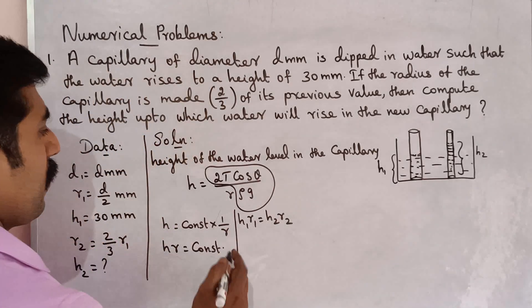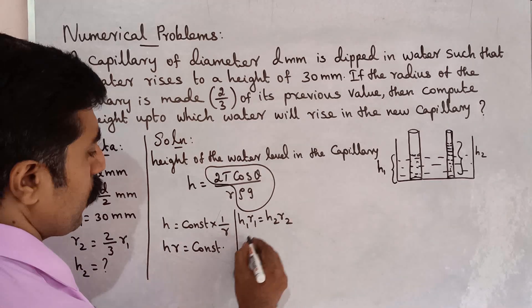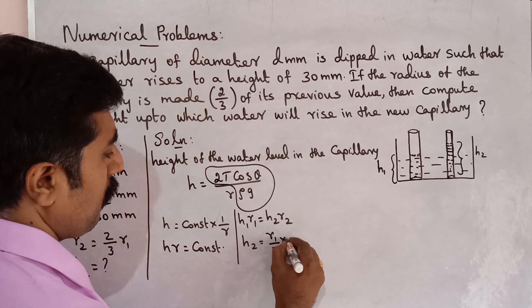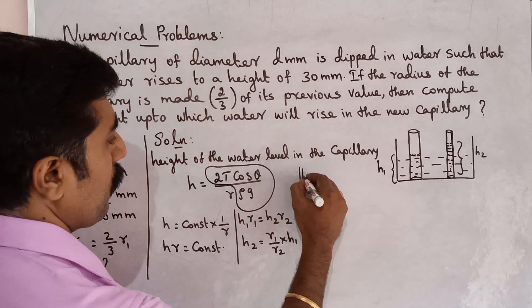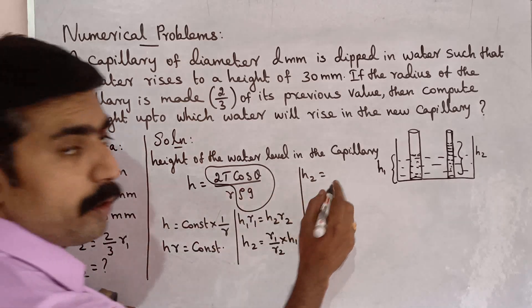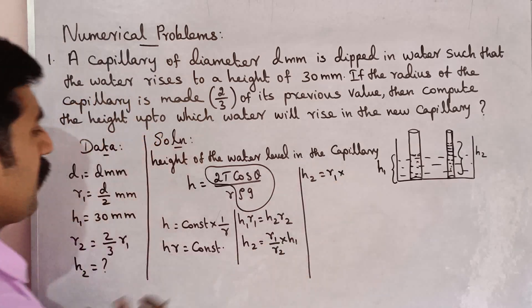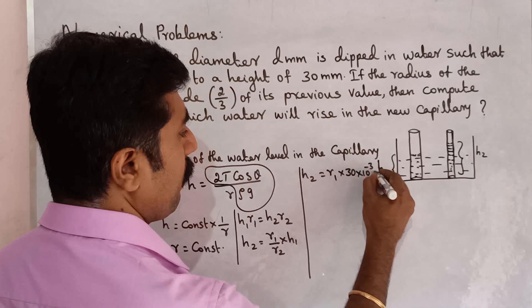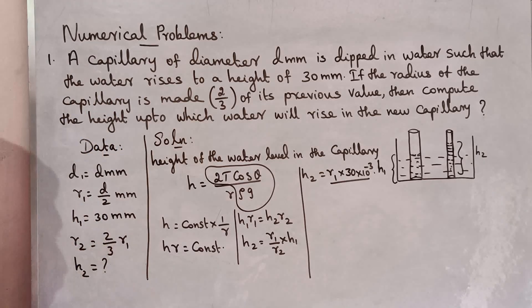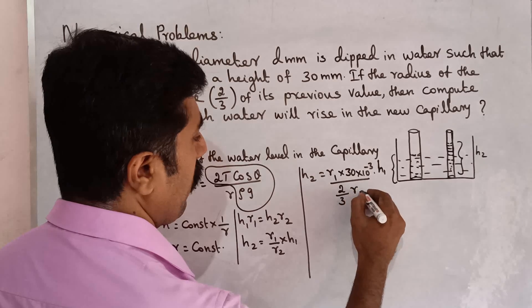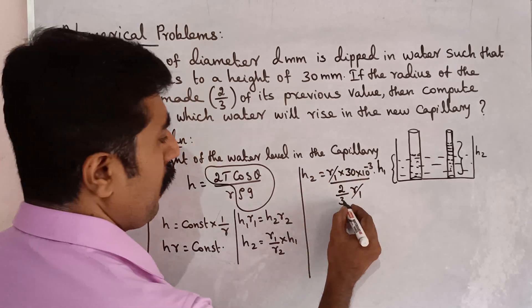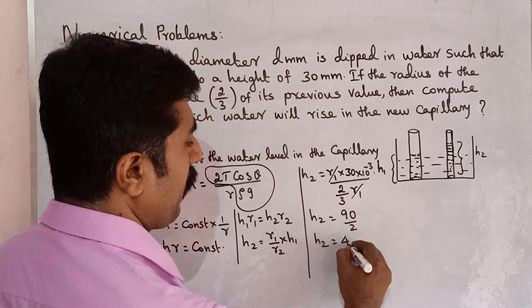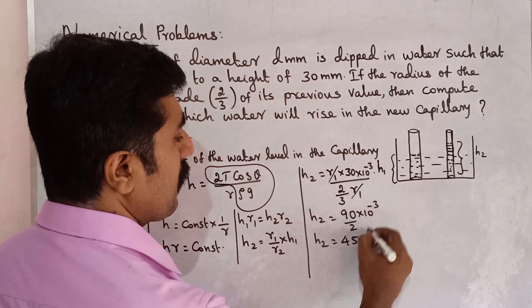So now, h2 = (r1/r2) × h1. Height of the first capillary is 30 mm. r2 is 2/3 of r1, so r1 over r2 equals 3/2. Therefore h2 = (3/2) × 30 = 90/2, so h2 is equal to 45 mm — that is 45 × 10⁻³ m, i.e., 45 millimeters.